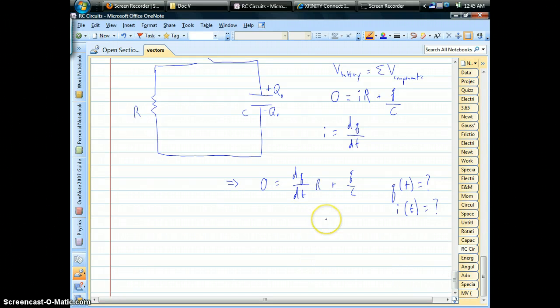So whenever you have differential equations, you want to try, if at all possible, to separate the variables. So I'm going to isolate the derivative. That means I have to move this q over c term to the other side, and I'll divide through by r. That's all it turns out to be.